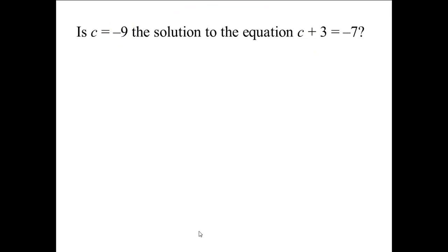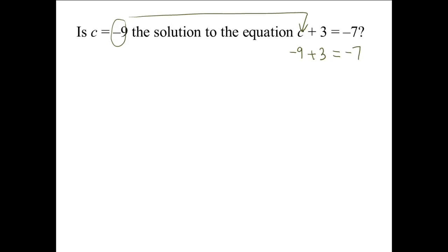Is c equals negative 9 the solution to the equation c plus 3 equals negative 7? We will take what c is supposedly equal to — negative 9 — and put that where we see the variable c. Doing so gives us negative 9 plus 3 equals negative 7. Negative 9 plus 3 is equal to negative 6, so we have negative 6 equals negative 7. This is false. So the answer is no, c equals negative 9 is not the solution.